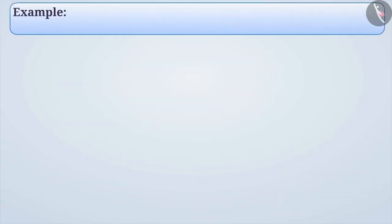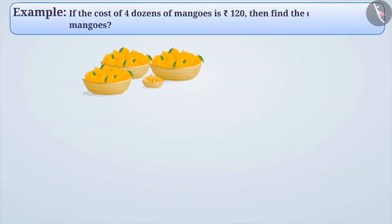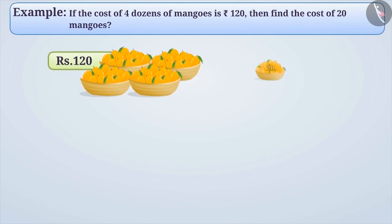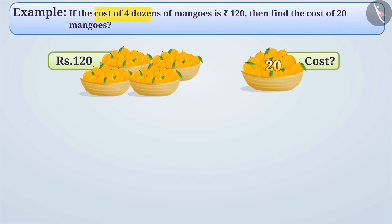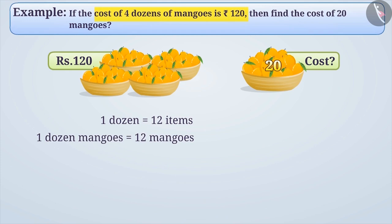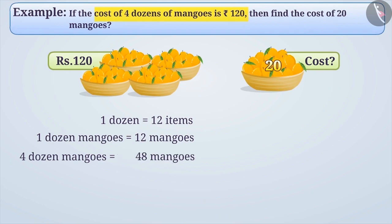Next Example: If the cost of four dozens of mangoes is rupees 120, then find the cost of 20 mangoes. From the given example, it is clear that the cost of four dozens of mangoes is rupees 120. Since one dozen is equal to 12 items, therefore one dozen is equal to 12 mangoes. Similarly, four dozen mangoes is equal to 12 into 4, which is equal to 48 mangoes. Thus, we can say that the cost of 48 mangoes is rupees 120.